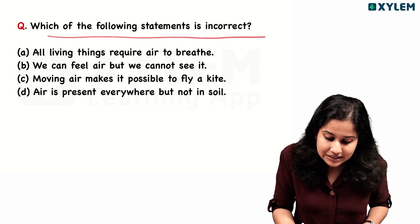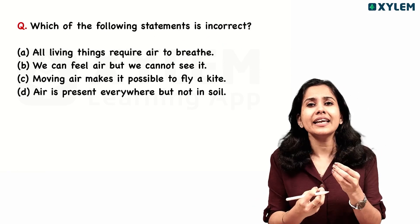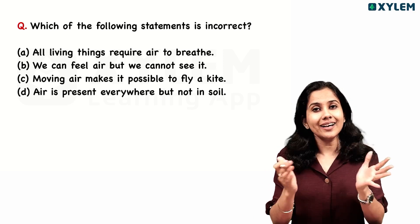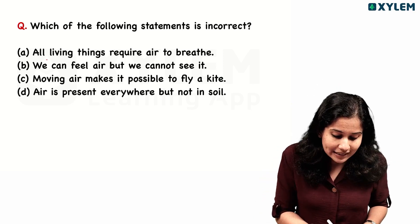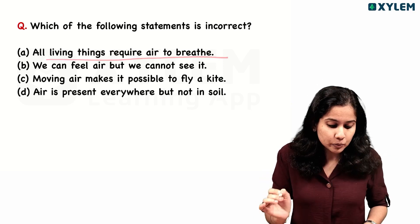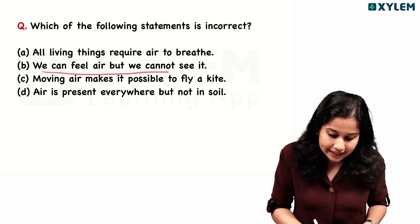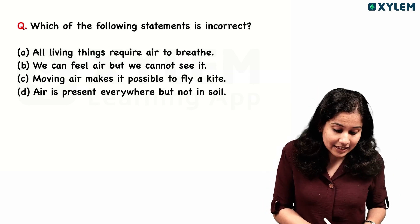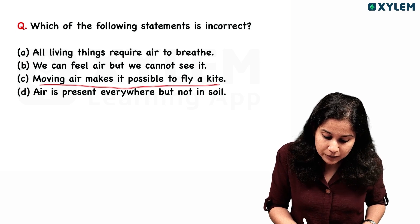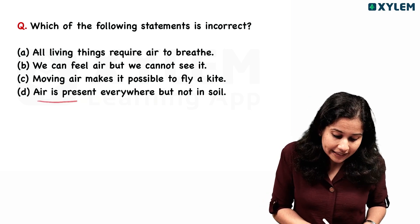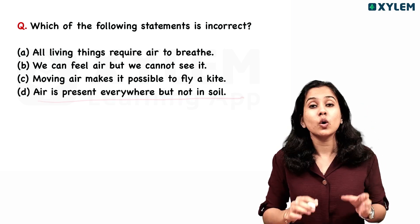Which of the following statements is incorrect? Options: All living things require air to breathe. We can feel air but we cannot see it. Moving air makes it possible to fly a kite. Air is present everywhere, but not in soil.